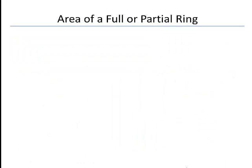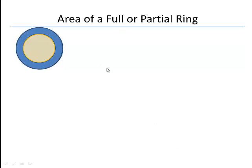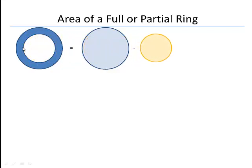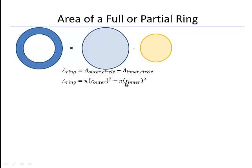We can apply the area of a sector formula — or area of circles — to full or partial rings. For full rings, if we want the area of the dark blue ring, we take the bigger circle and subtract the smaller circle. The ring area equals the outer circle area minus the inner circle area: pi times R-outer squared minus pi times R-inner squared, using capital R for the larger radius and little r for the smaller.